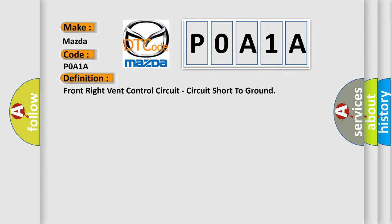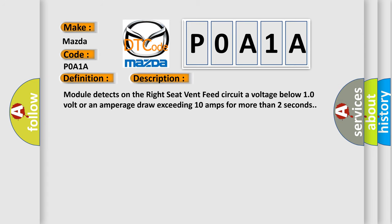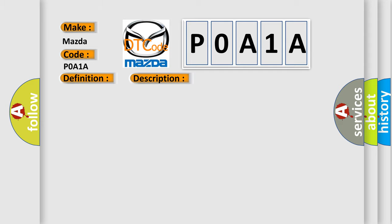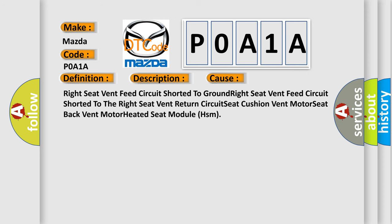The basic definition is: Front right vent control circuit, circuit short to ground. The module detects on the right seat vent feed circuit a voltage below 10 volts or an amperage draw exceeding 10 amps for more than 2 seconds. This diagnostic error occurs most often due to: right seat vent feed circuit shorted to ground, or shorted to the right seat vent return circuit, seat cushion vent motor, seat back vent motor, or heated seat module (HSM).